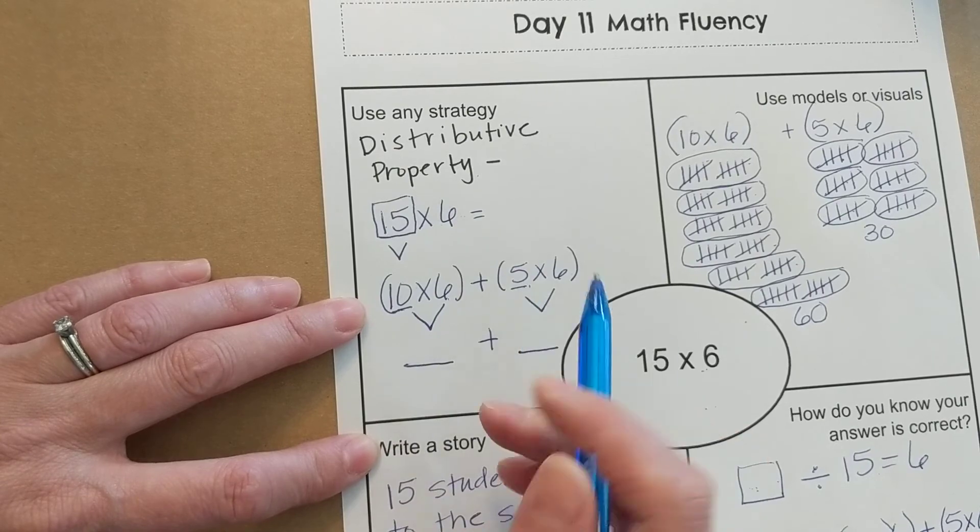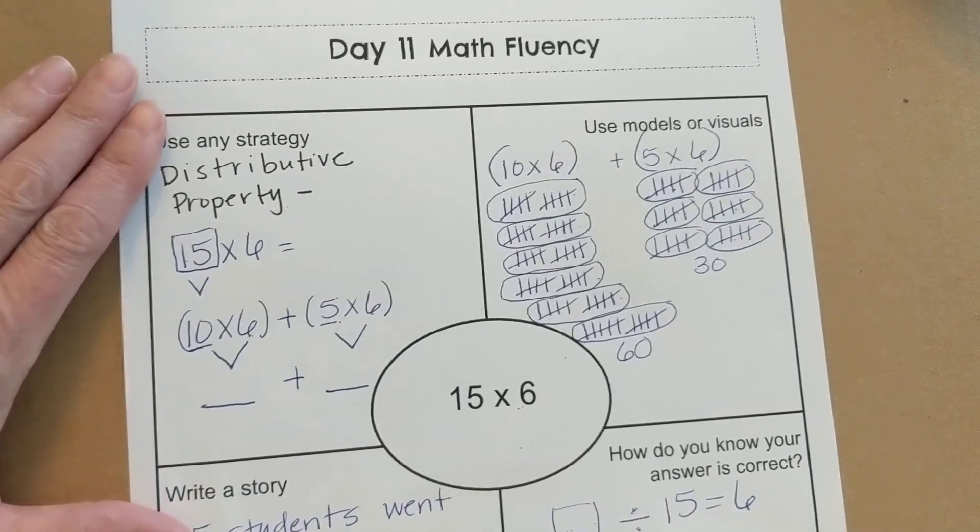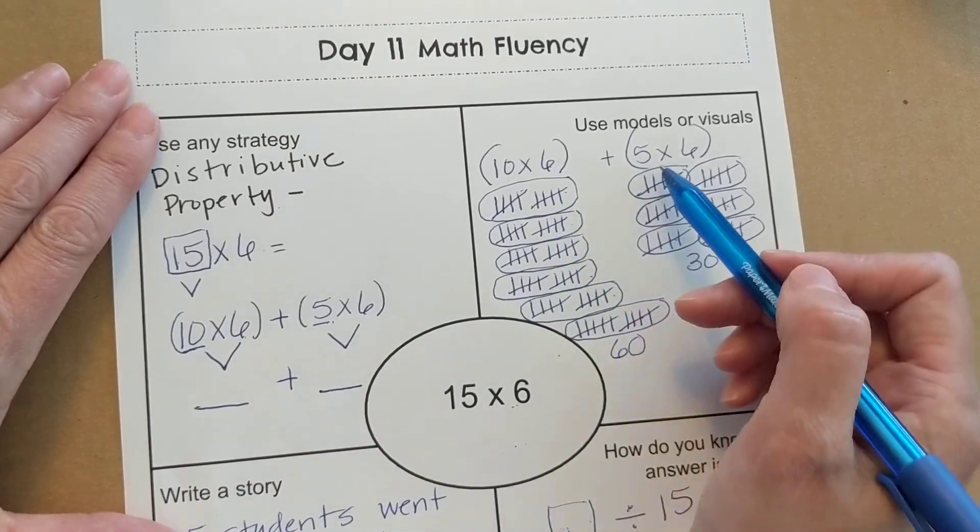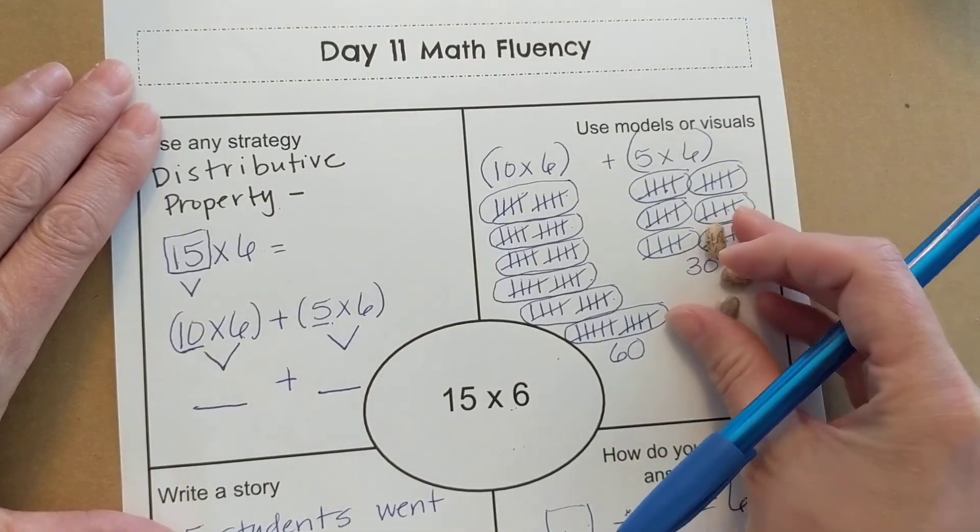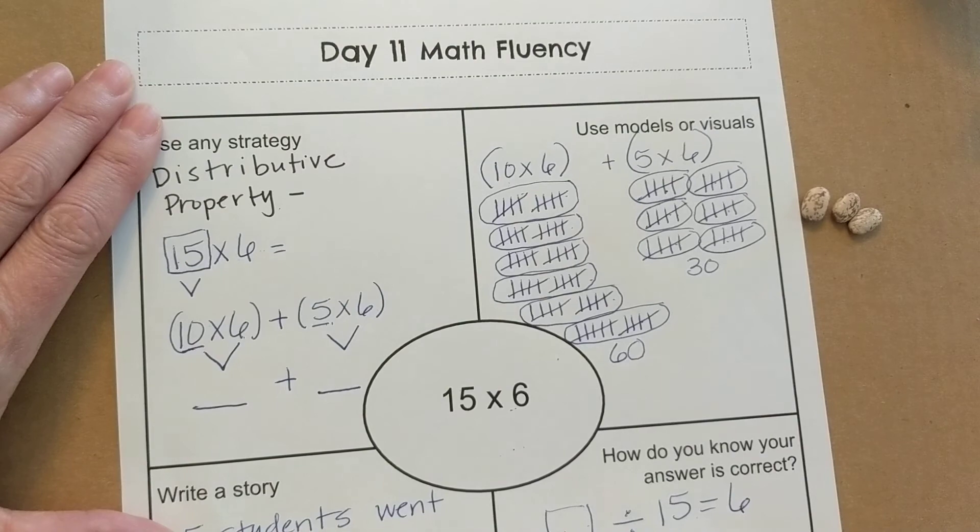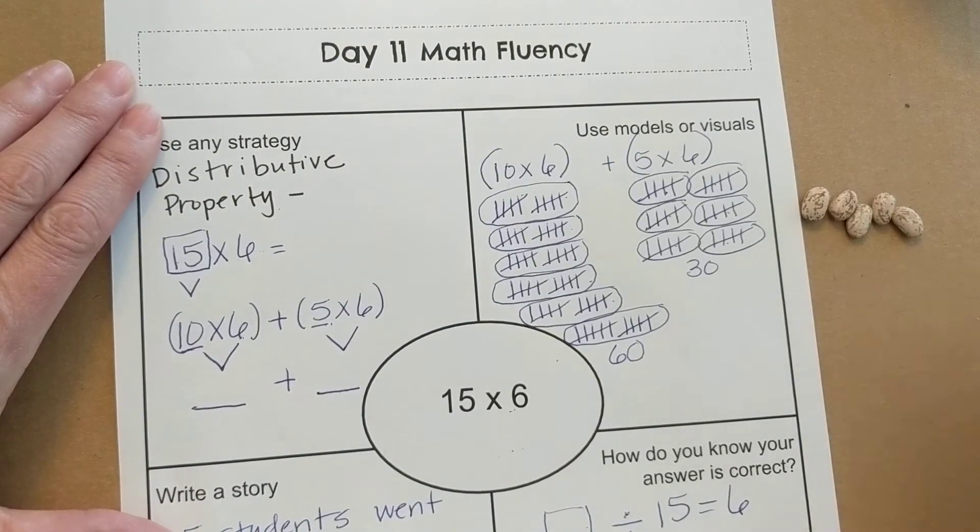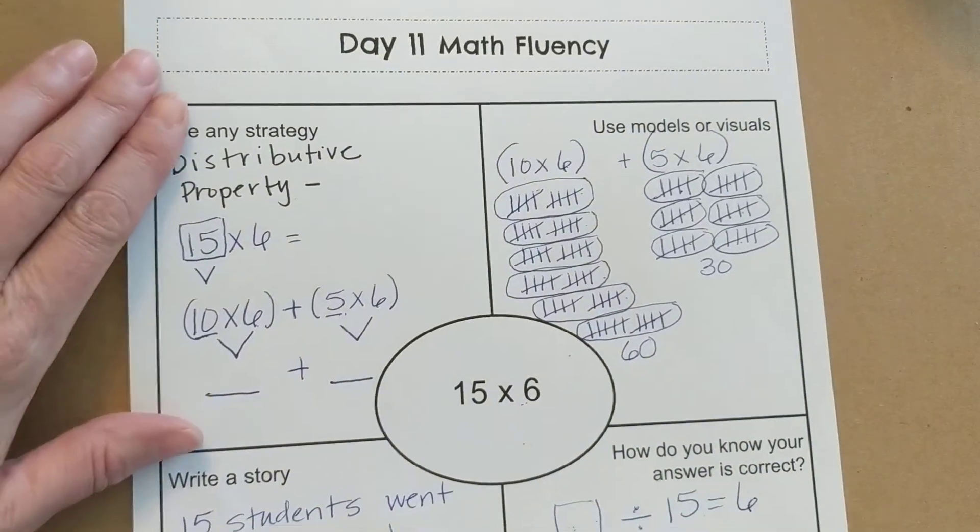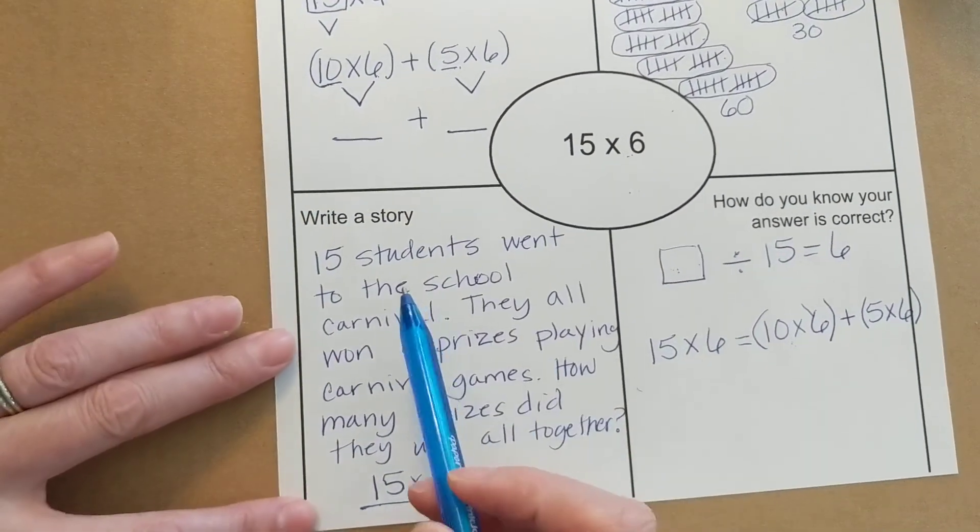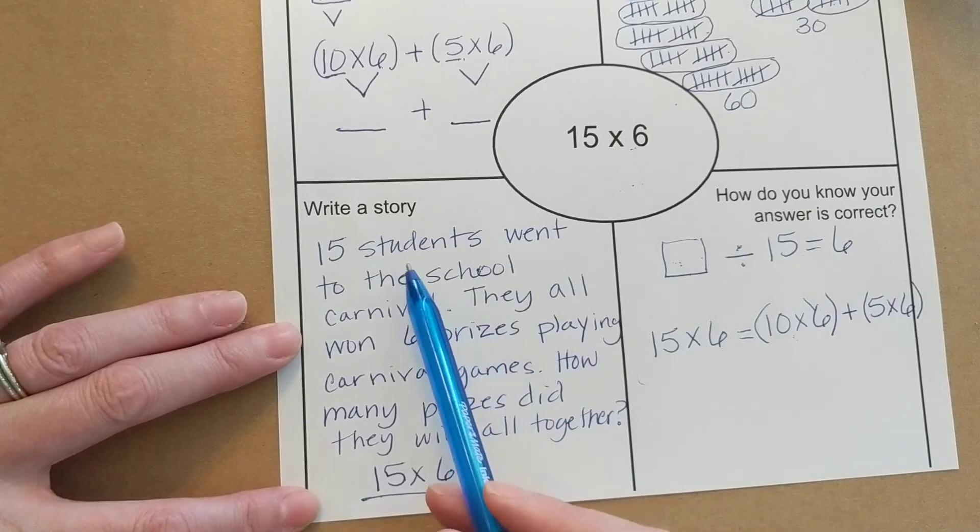Okay, solve, figure out your answer, make equal groups or use models. The beans could work just as well. I could make groups of five until I get to six groups and that's another way that you could solve this problem. Write a story problem: 15 students and six prizes each is what I chose. I'd like you to come up with your own problem.